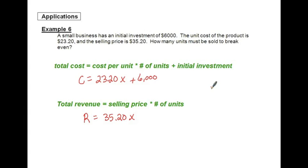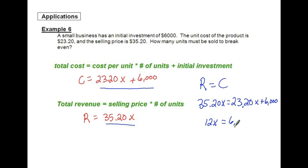Now, that break even point is when your revenue and cost are equal to each other. So I'm going to just substitute these values into that equation now. 35.20x is equal to 23.20x plus 6,000. Can I solve that for x now? Sure. So subtract, you get 12x equals 6,000. So x is 500.